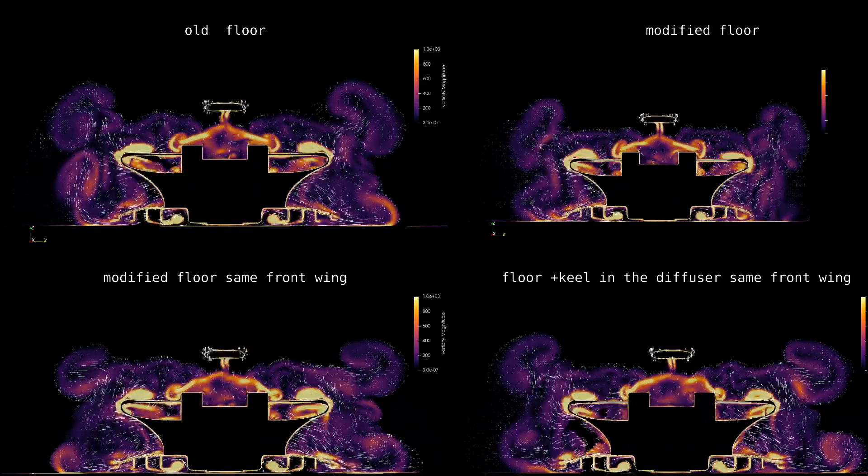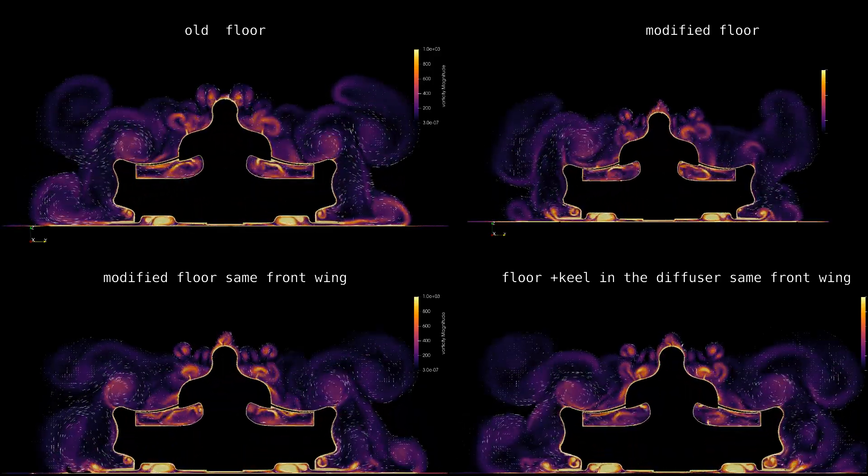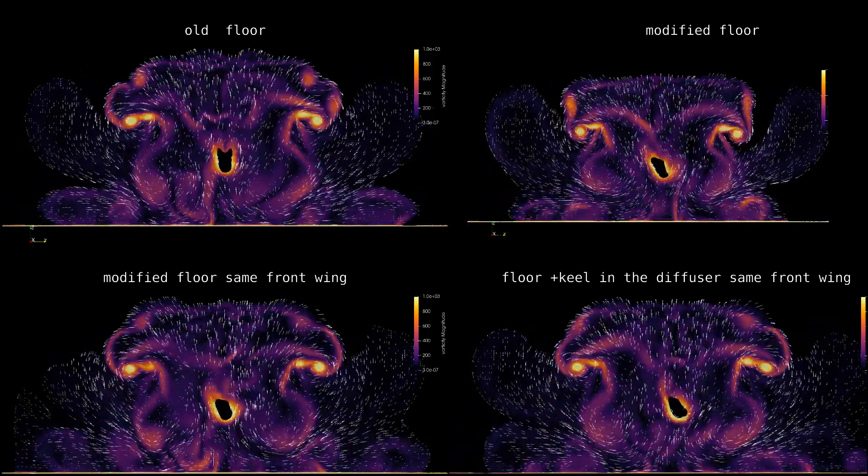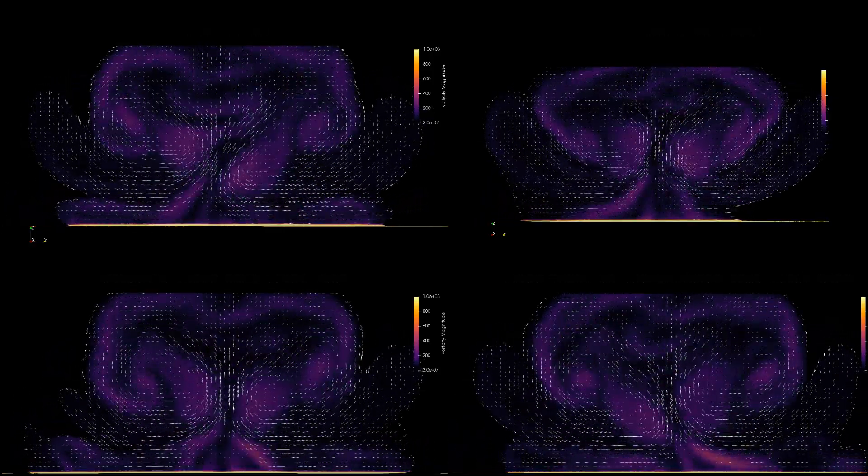The other half of the gain was through the addition of a keel in the diffuser. 20% more just for this. Again illustrating it's the maintenance of the vortex structure adding performance.